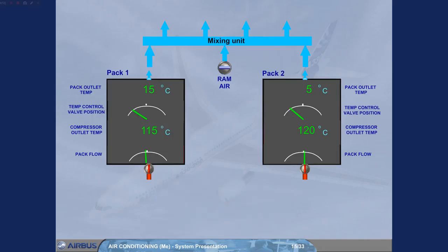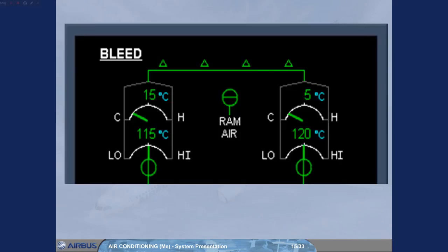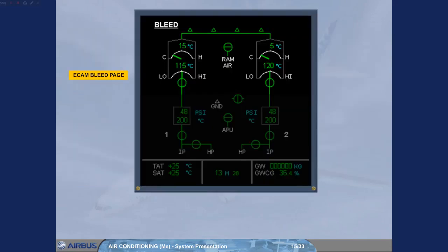These parameters with the valve positions are displayed on the upper part of the ECAM bleed page. Having discussed the air conditioning packs, we will now look at how temperature and flow regulation is achieved throughout the aircraft.